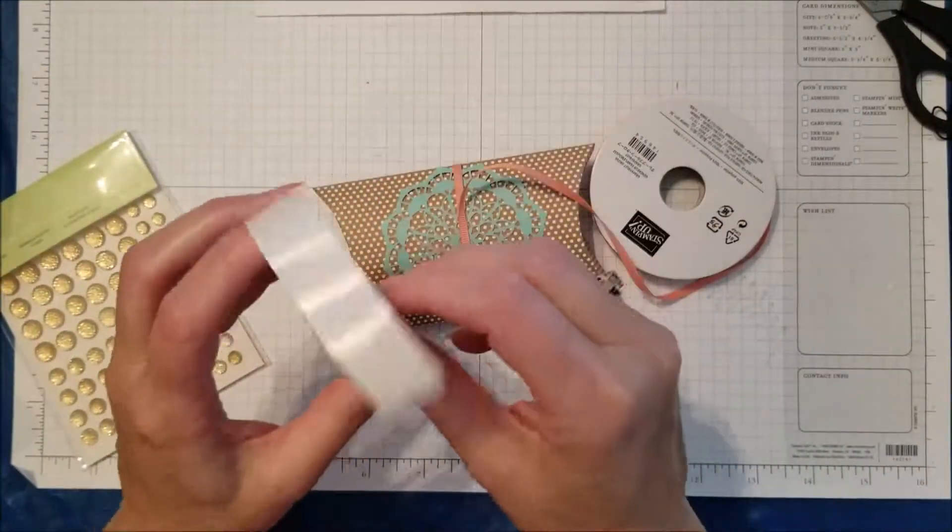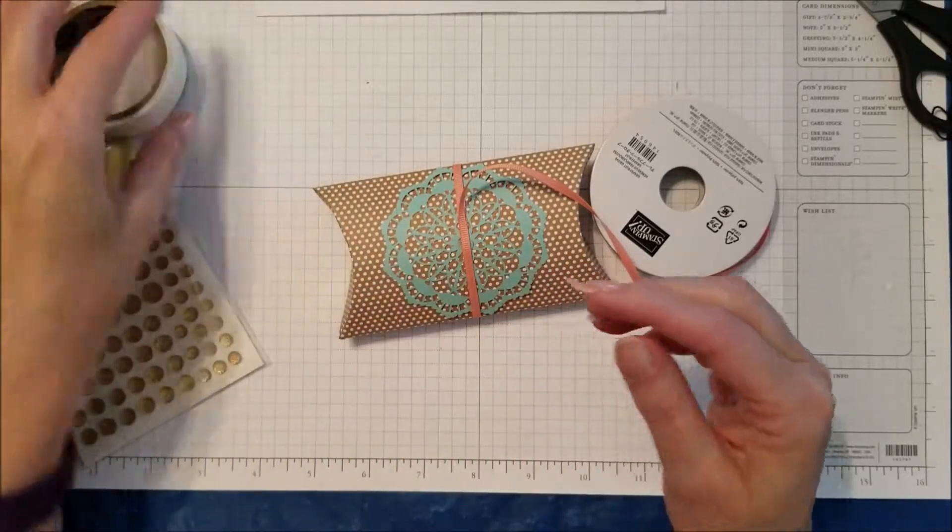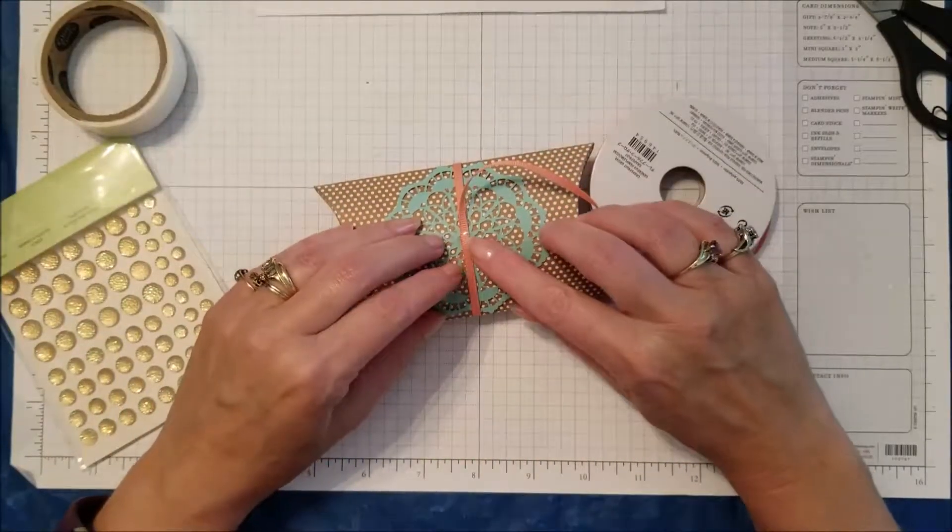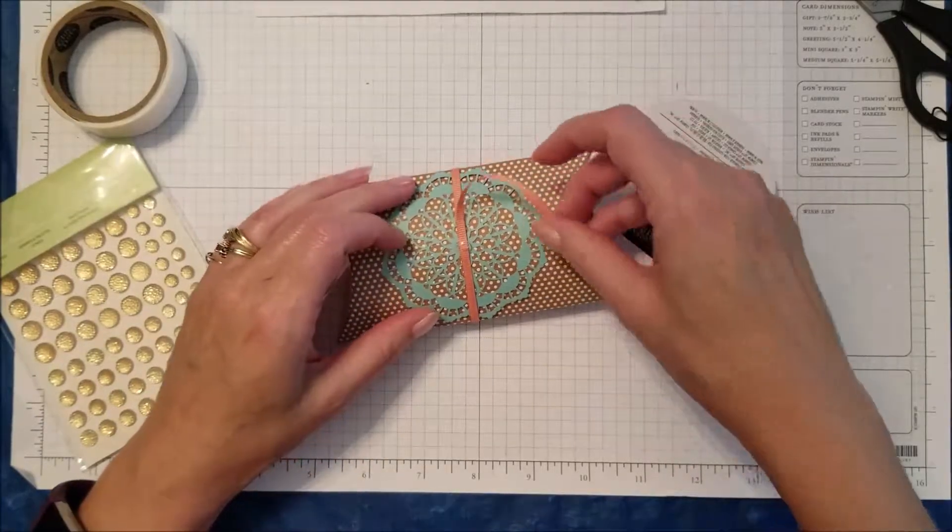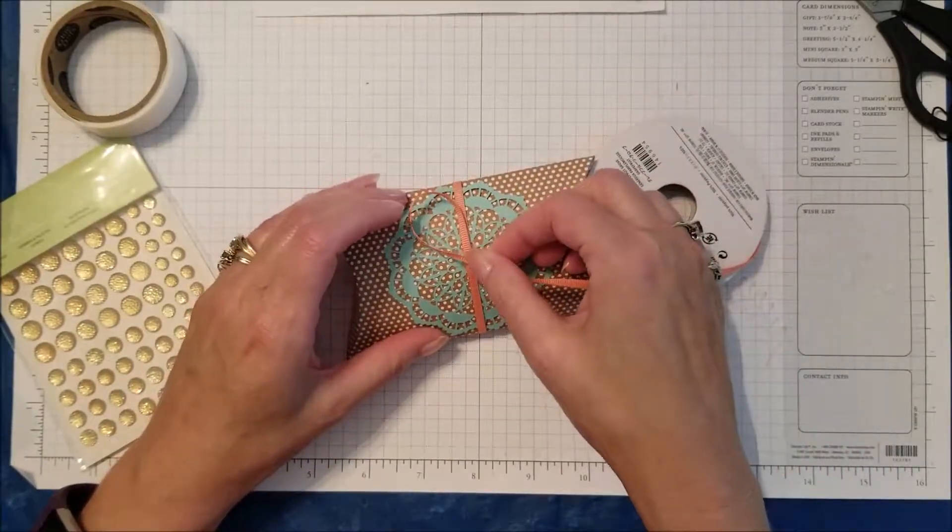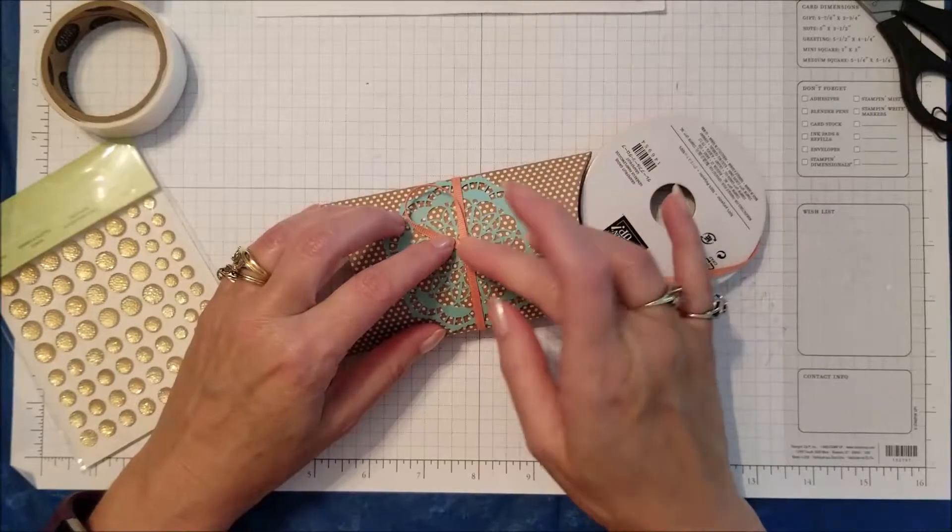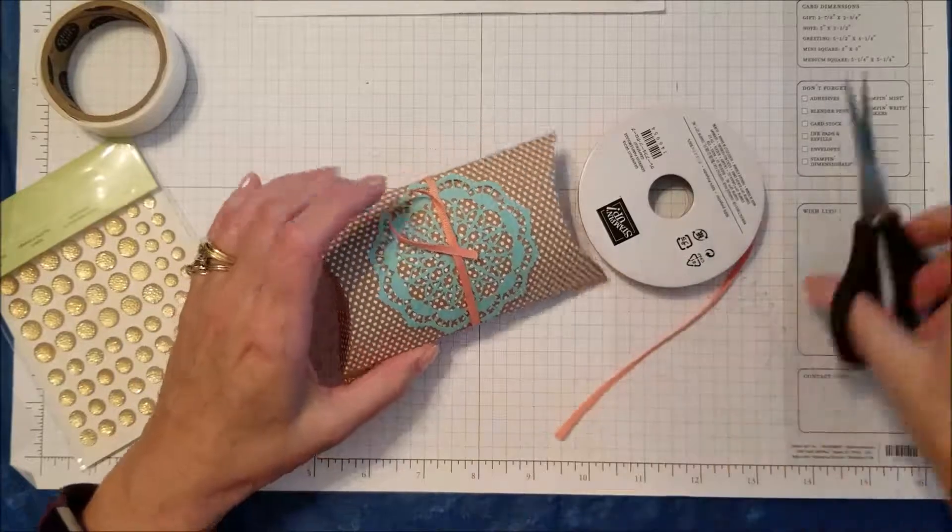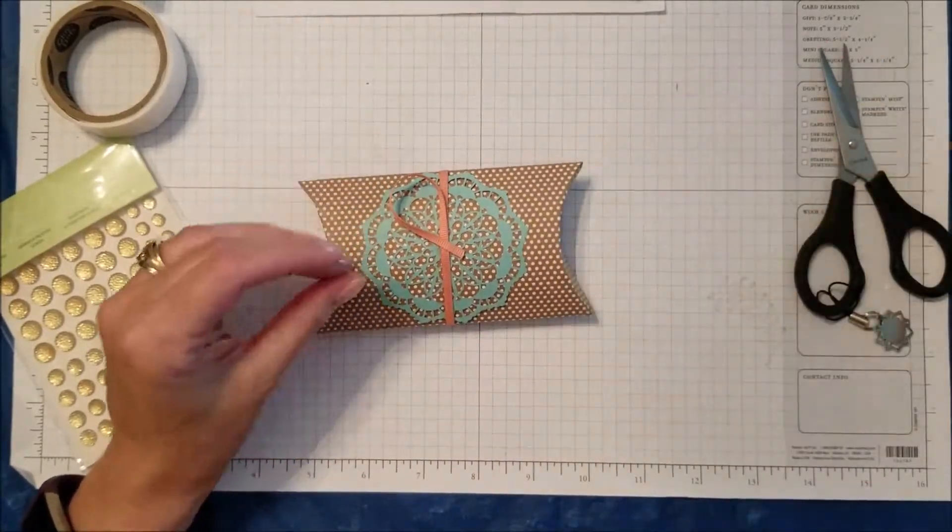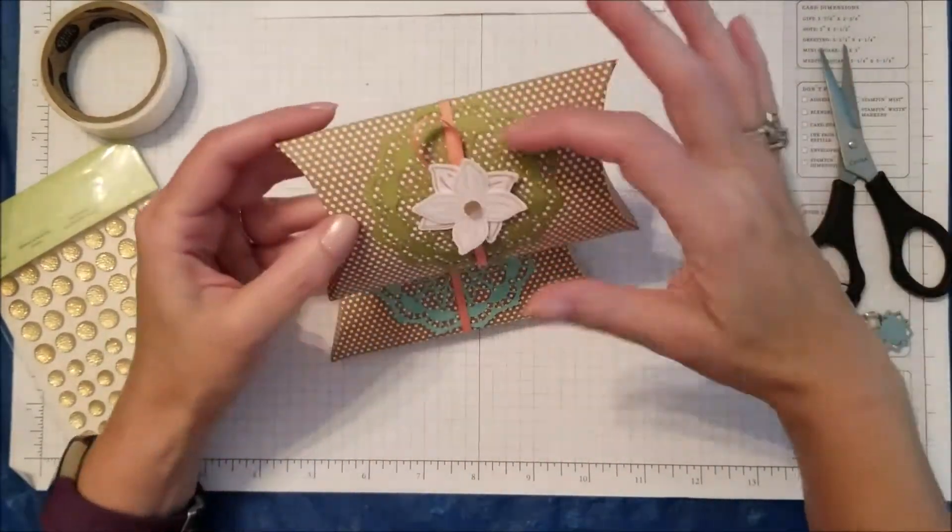Now I kind of wanted to do a little loop-de-loo just so you can see a little bit more of it. I'm going to take a third glue dot, put that right up there on top, and I'm just going to take my ribbon and kind of loop it like that. There's no particular specific way that you have to do it, I just kind of looped it.